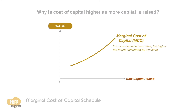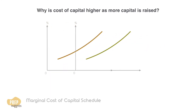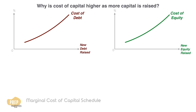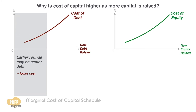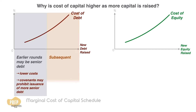Why would this be the case? Let's examine the individual components. For debt financing, the earlier rounds of issuance may be senior debt, where the costs may be lower. Such debt can come with covenants that prohibit the company from issuing more senior debt, so the company can only issue less senior debt, which costs more, in the later rounds.